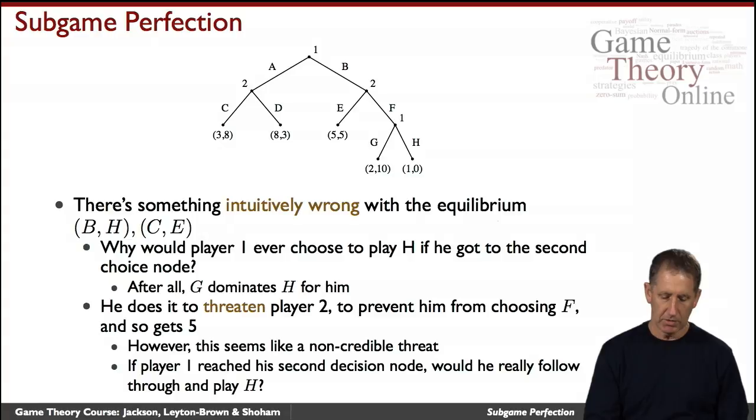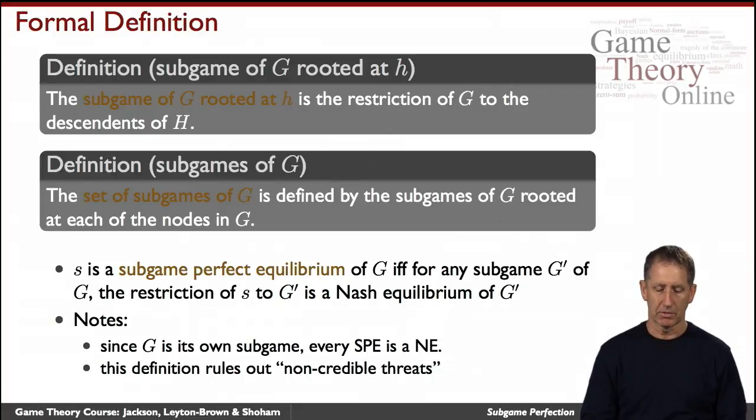The way to understand it is by claiming that they would go down H here, Player 1 is threatening Player 2 and telling them, listen, do not consider going down here because I'm going to go down here and you would get a 0. But this threat is not credible, because Player 2 believes that Player 1 actually would go down here. So how do we capture this in a formal definition? That brings us to the notion of subgame perfect equilibria or subgame perfection.